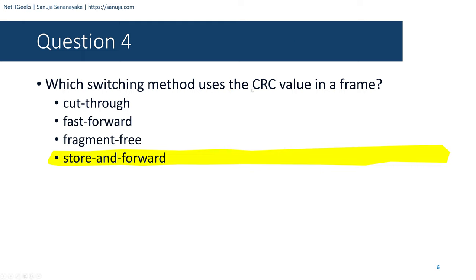Question number forty-five: What action will occur if a switch receives a frame that does have the source MAC address in the MAC address table? Options are: the switch refreshes the timer on that entry; the switch shares the MAC address table entry with connected switches; the switch does not forward the frame; or the switch sends the frame to a connected router. The answer is the switch refreshes the timer on that entry. The MAC address table gets refreshed, and entries that are no longer new eventually get discarded.